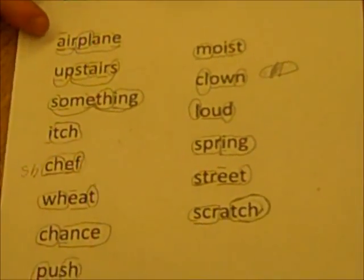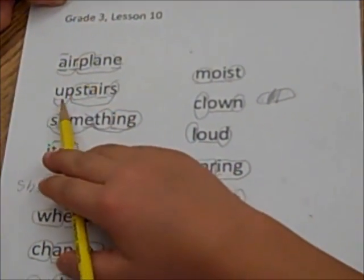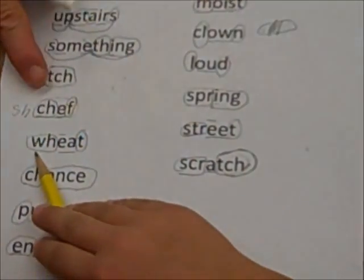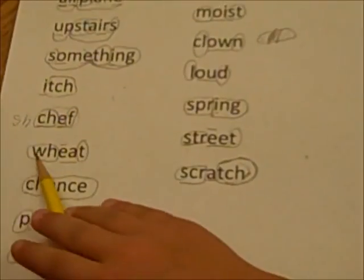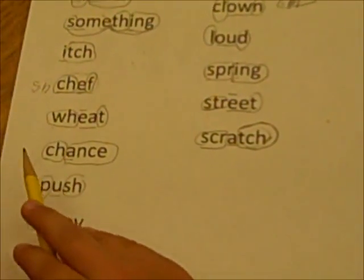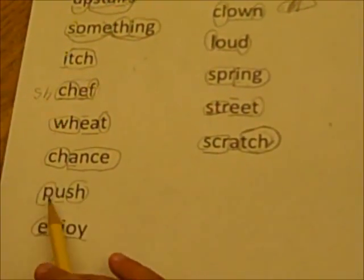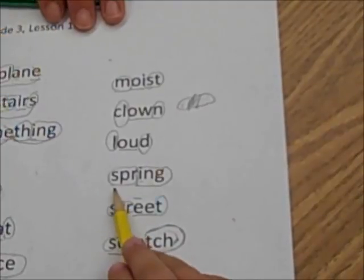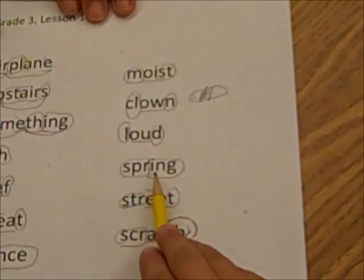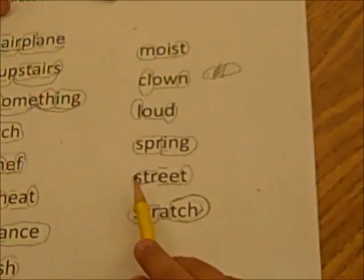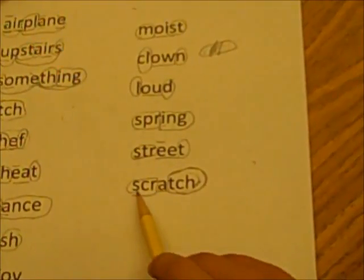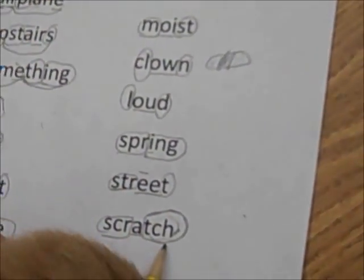Okay, Mr. Nick, your turn, buddy. Airplane. Upstairs. Something. Itch. Chef. Is it chef? Chef. That's the tricky one. Wheat. Chance. Push. Enjoy. Moist. Clown. Loud. Spring. Street. Scratch.